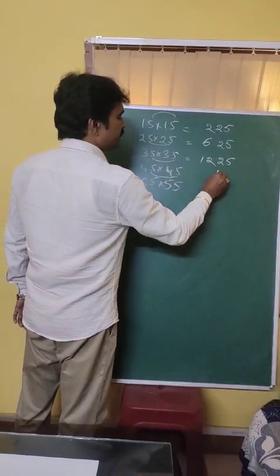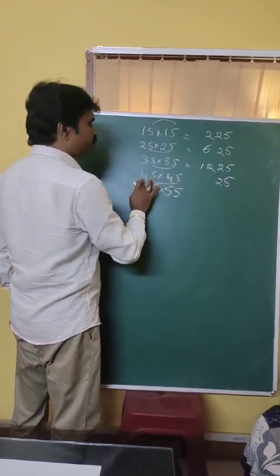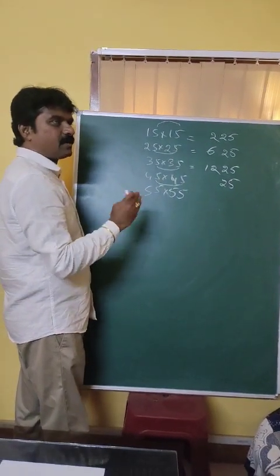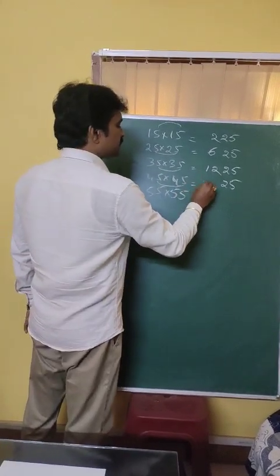5 into 5, 25. And this is 4. After 4 the next number is 5. 4 into 5, that is 20.